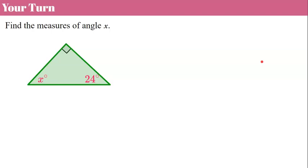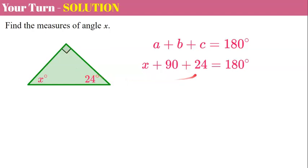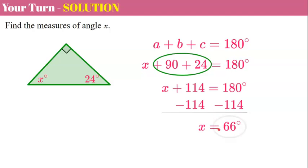Now it's your turn. I would like you to use that theorem to find the missing measure of X. Please pause the video now and come back when you're ready. Welcome back. So let's first write down our theorem which states that our three interior angles added together have a sum of 180 degrees. We're going to substitute in what we know: we have angle X, angle 90, and an angle that's 24 degrees. When we add all three of these together they must be 180 degrees. To solve for X, I'm going to combine my like terms: 90 plus 24 is 114. Then I'll subtract 114 from each side. So we have X on the left and 180 minus 114 is 66 degrees. Our missing angle measure in this triangle is 66 degrees.